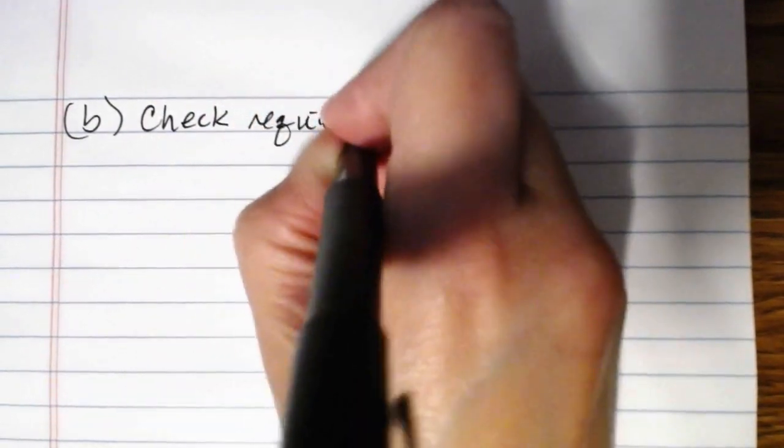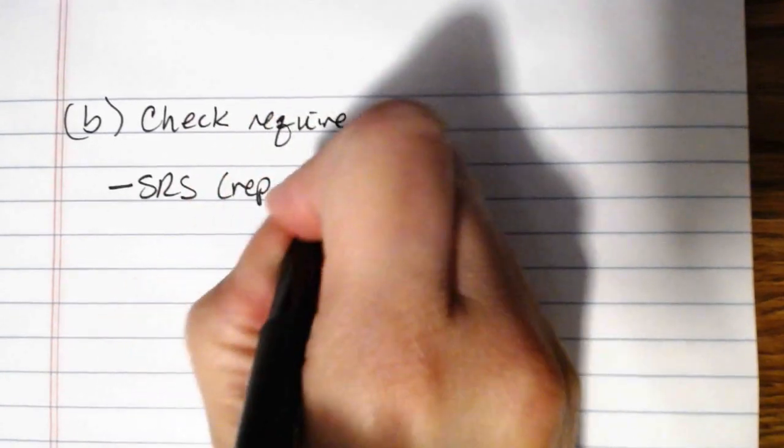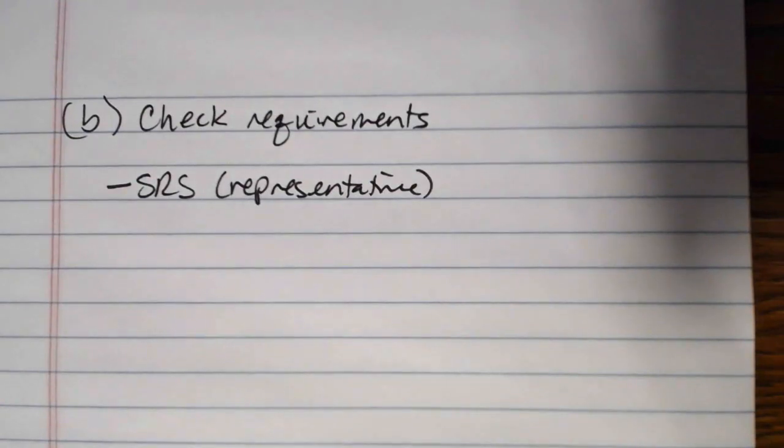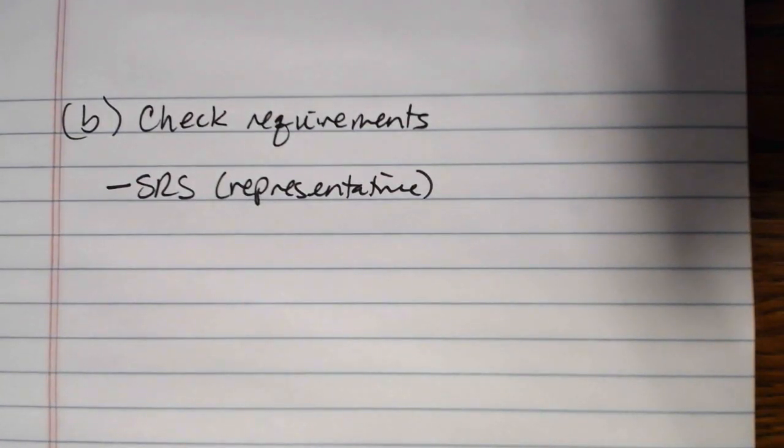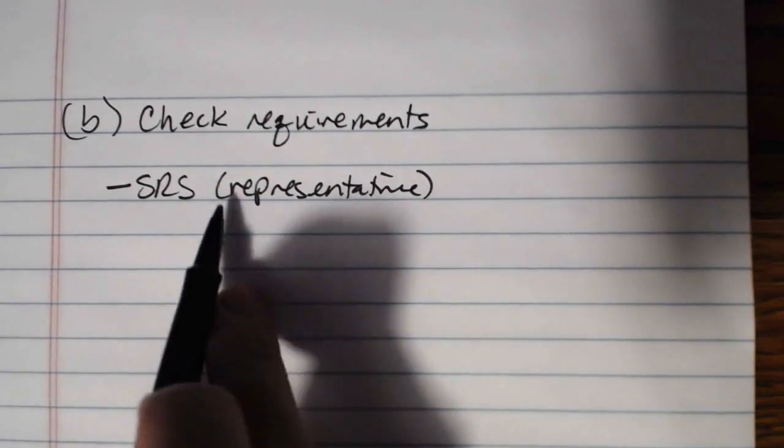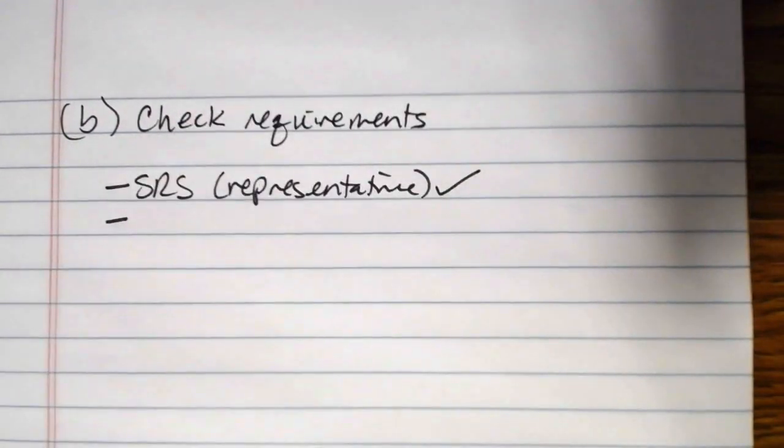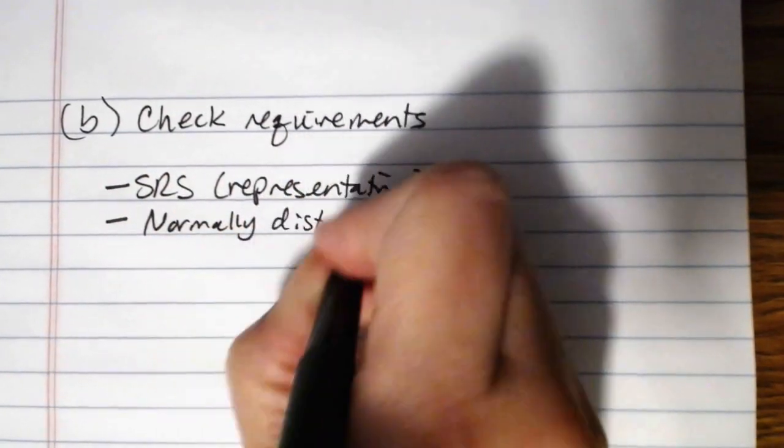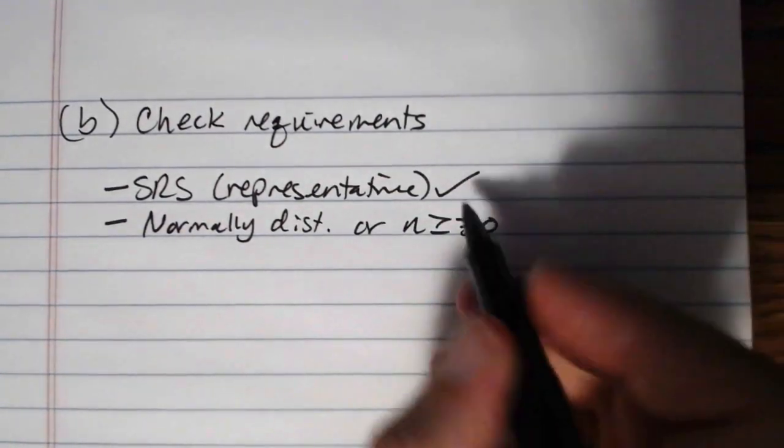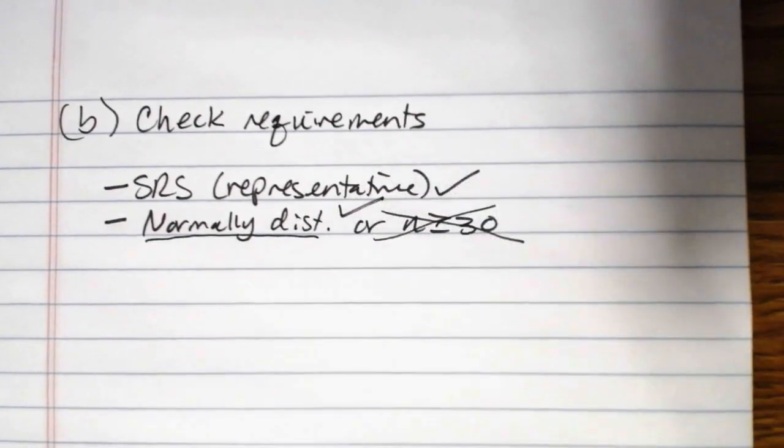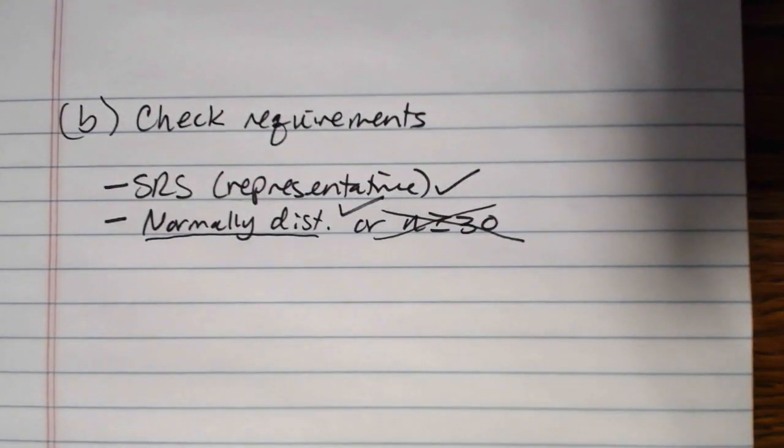In part B, this is where we want to check our requirements. Make sure that we actually have enough of the requirements met to be able to run the test. Do we have a simple random sample or at least a sample that's representative? It didn't actually say that these followed a simple random sample, but it did say over the past eight weeks the veterinarian took the following glucose readings from the horse. We're going to assume that this is a representative sample. And then we need to know something about X being normally distributed. We were told to assume that X follows a normal distribution, so we can check that off. We meet our requirements for inference here.